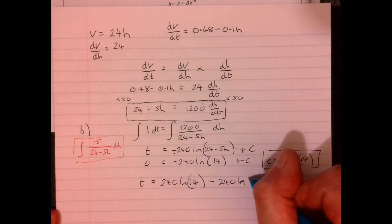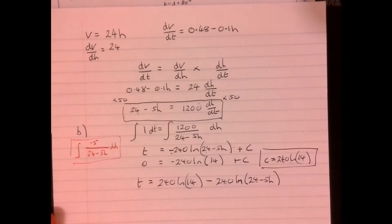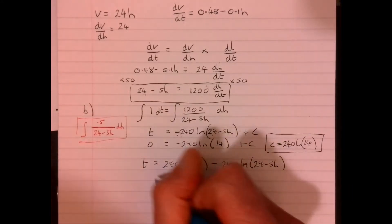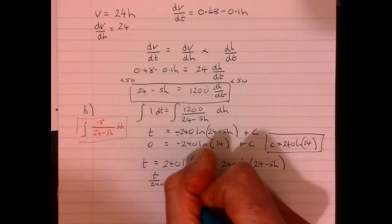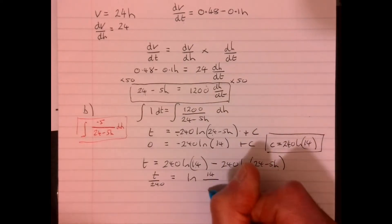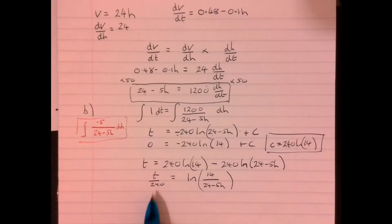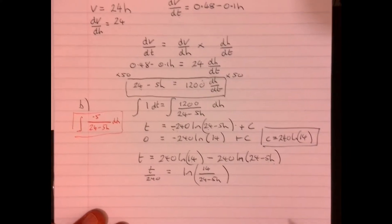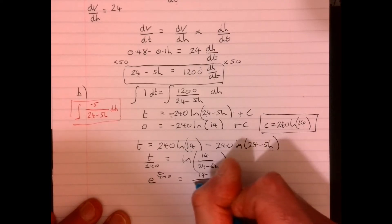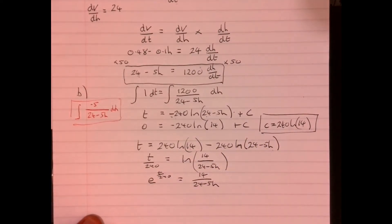Now, these, they look really hard, but actually they all kind of sort of fall into a similar idea, similar pattern as you're working through. Wait a minute, 240 is a common factor. So let's deal with that. t over 240 equals ln, wait a minute. I've got ln 14 take away ln 24 minus 5h. I can write that like this. Now, I wish the ln weren't there. Wait a minute, if we e both sides, we're just going to get e to the t over 240 equals 14 over 24 minus 5h. We've done the hard work now.